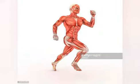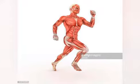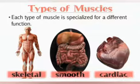Muscles are tissues that cover the bones and they are attached to the bones with the help of special tissues called tendons. Both muscles and bones work together to make movement possible, and they are also important for processes such as digestion.